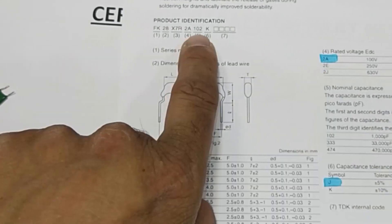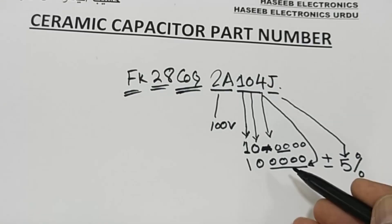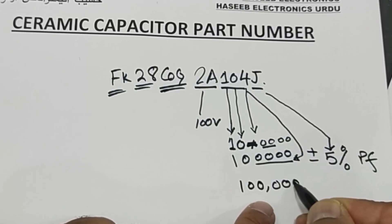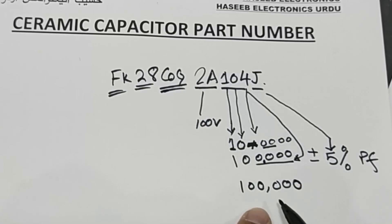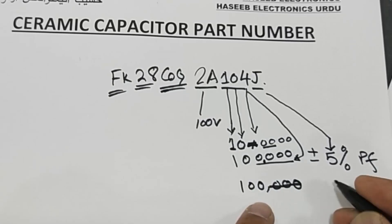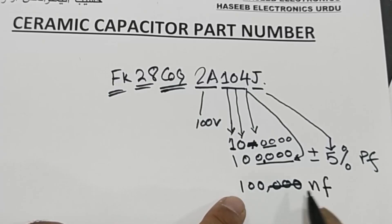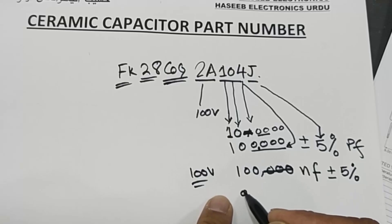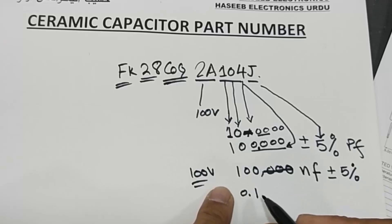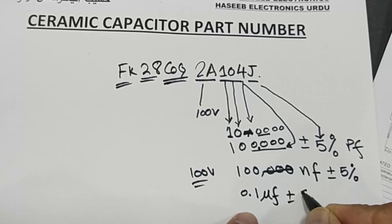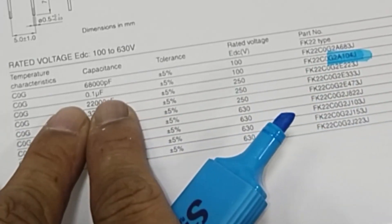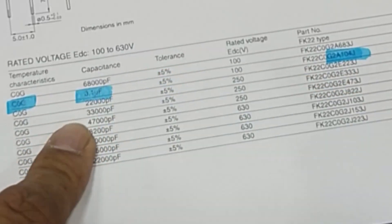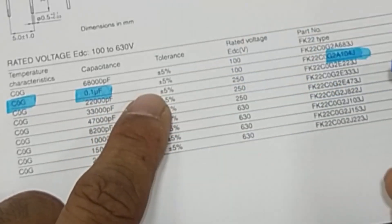So: 2A is the voltage value (100 V), and 104 is the capacitance. That is 100,000 picofarad — converting: remove three zeros and it becomes 100 nanofarad. So we can say 100 nanofarad, plus or minus 5%, at 100 volts. Or in microfarad: 0.1 µF. The temperature coefficient from COG is plus or minus 30 ppm per degree centigrade, and J is plus or minus 5%.